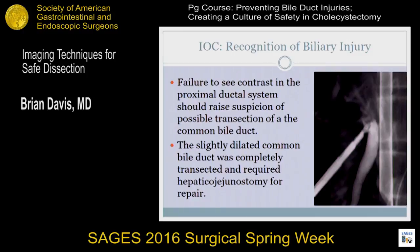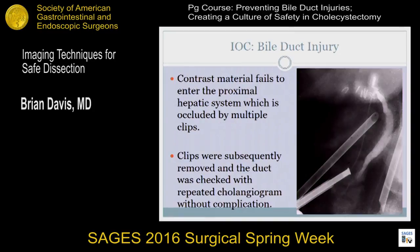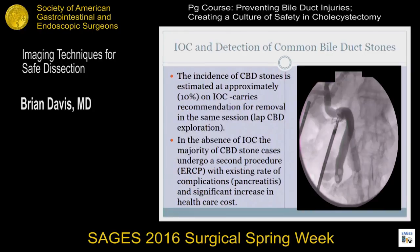This cholangiogram demonstrates a total duct transection. It's a gut-wrenching feeling to see this type of cholangiogram, but the ability to go back and do the hepaticojejunostomy and present the patient with a single operation with decreased morbidity is really a feeling of success when dealing with these difficult sclerotic gallbladders. This is an example of a reversible injury where the surgeon ran into extensive bleeding at the hilar plate, placed multiple clips to control the bleeding, and subsequently the cholangiogram demonstrates complete occlusion of the proximal right and left ducts. With removal of these clips, the cholangiogram reverted to normal and the patient had no further complications.